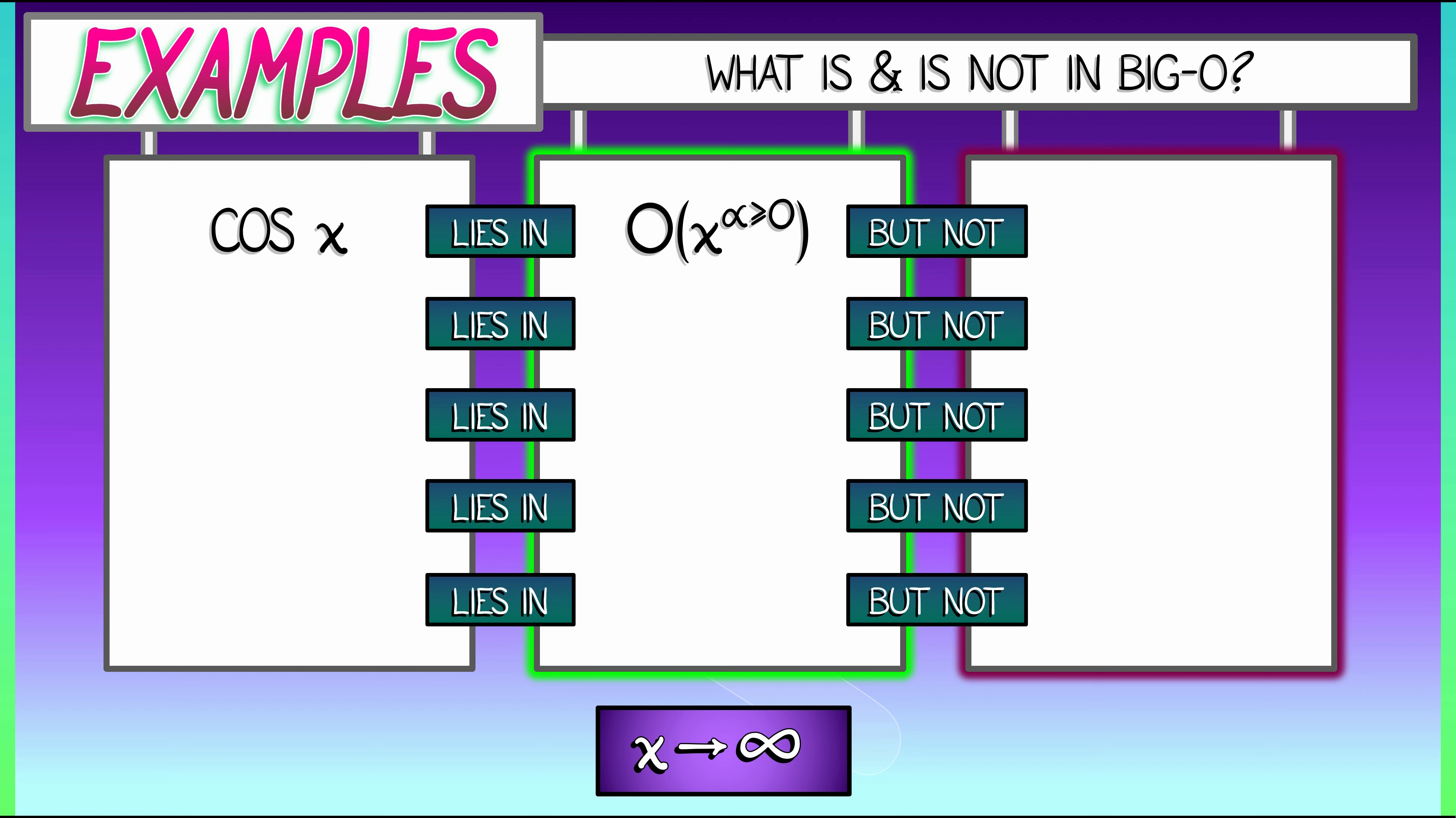But it does not lie in big O of, say, one over x, or x to the alpha where alpha is strictly negative. Those functions all tend to zero, which cosine does not do.